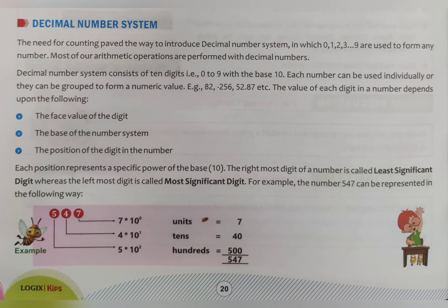The value of each digit in a number depends on the following: first, the face value of the digit; second, the base of the number system — like the base of the decimal number system is 10; and third, the position of the digit in the number — such as 1, 10, 100, 1000, 10,000 — those are the place values.